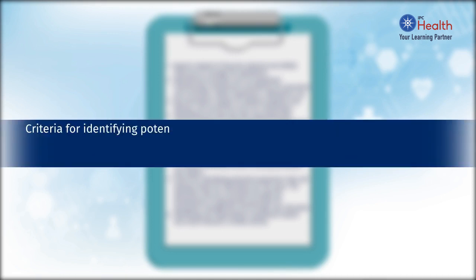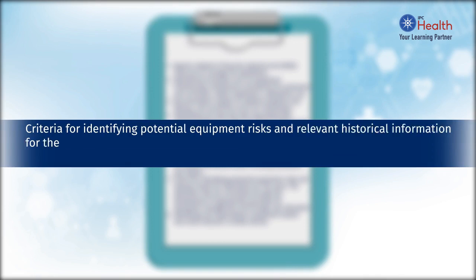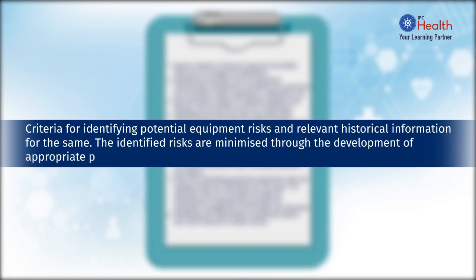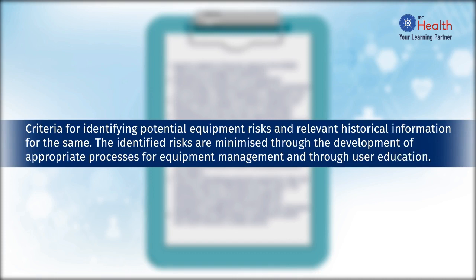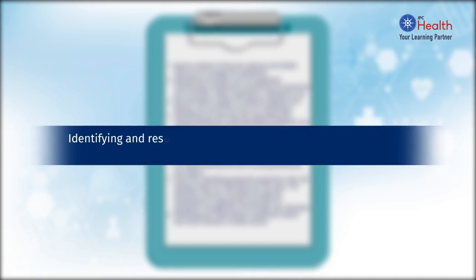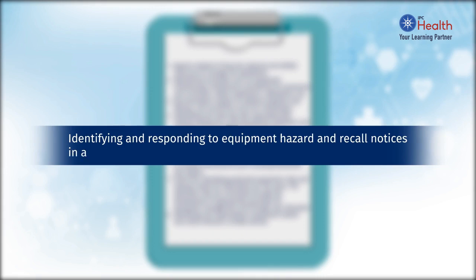Criteria for identifying potential equipment risks and relevant historical information for the same. The identified risks are minimized through the development of appropriate processes for equipment management and through user education. Identifying and responding to equipment hazard and recall notices in a timely manner.